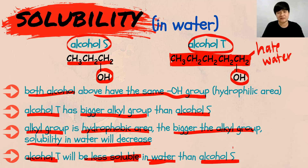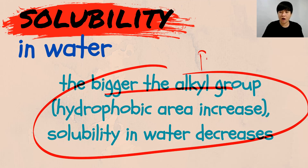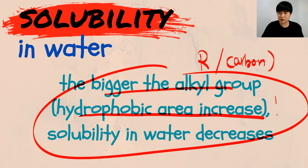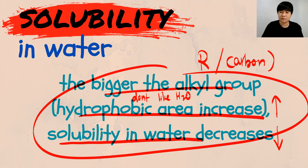As a conclusion: the bigger the alkyl group — the bigger your R group or carbon group — the larger the hydrophobic area. When the hydrophobic area increases, the solubility of alcohol in water will decrease, because hydrophobic area means you don't like water. When the area that doesn't like water is very big, the solubility of alcohol in water will decrease. The higher the R group, the bigger the R group, the lower the solubility in water.